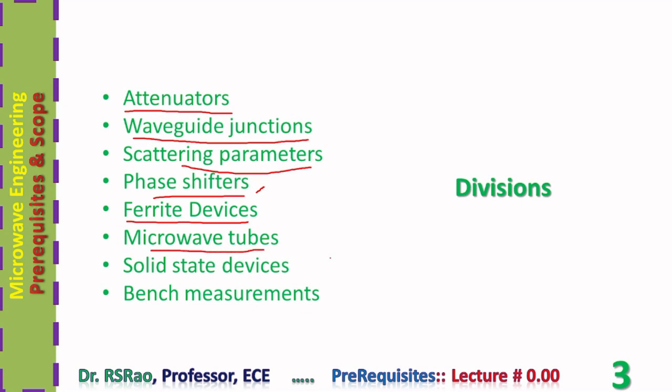Using ferrites, isolators, circulators, gyrators, and several other microwave components can be designed. Microwave tubes — klystron amplifiers, reflex klystron oscillators, magnetrons, and traveling wave tubes — are all examples of microwave tubes, which are microwave sources capable of generating or amplifying a microwave signal. Solid state devices include Gunn oscillators, Gunn amplifiers, and oscillators using IMPATT diodes, all falling under the category of solid state devices.